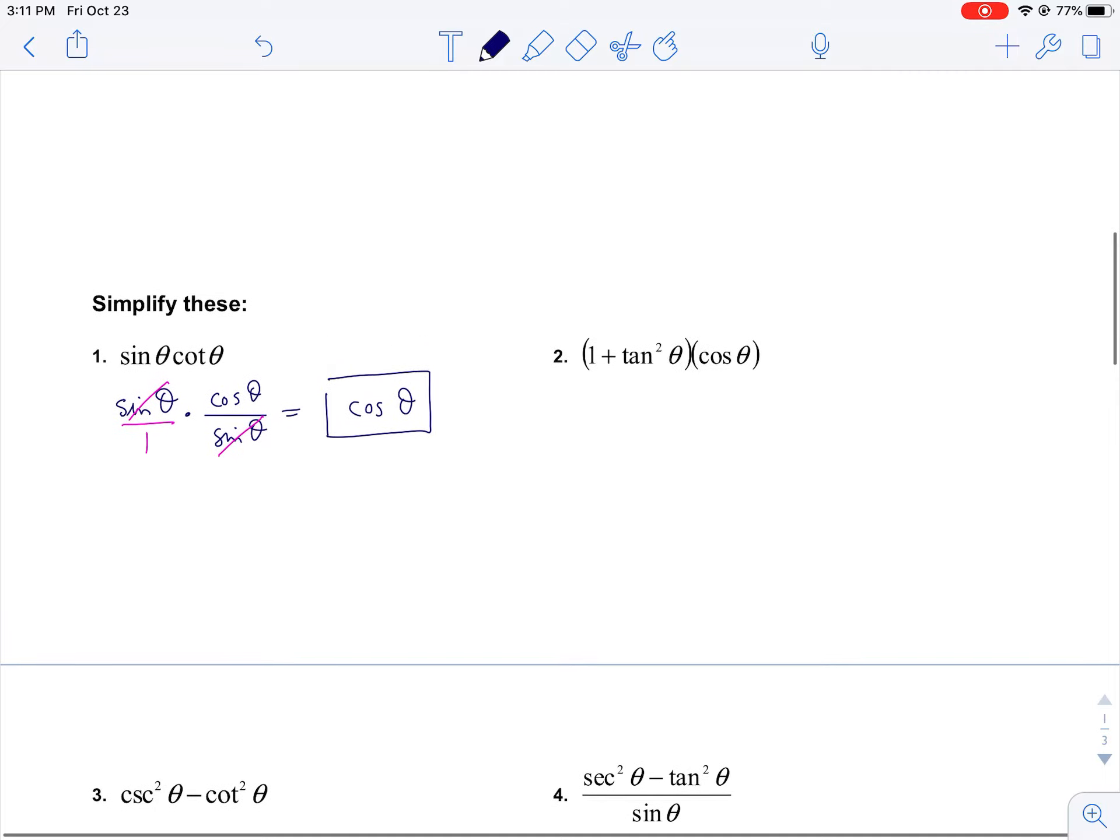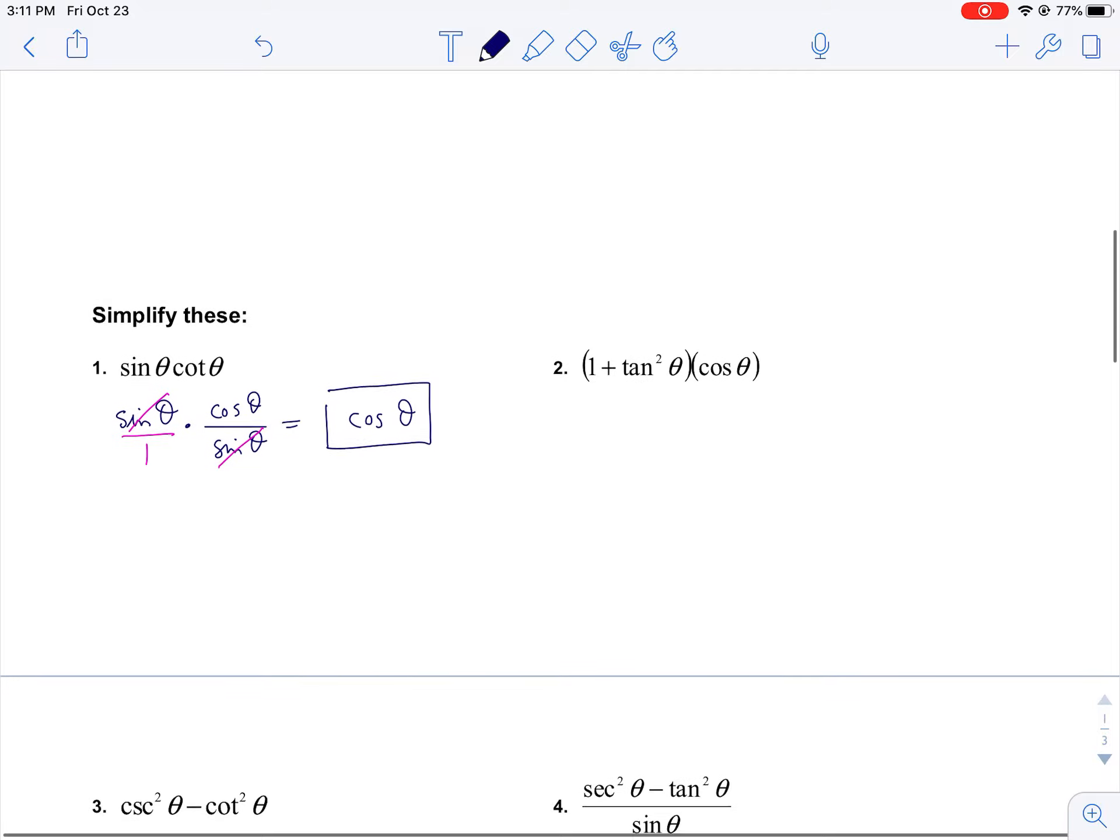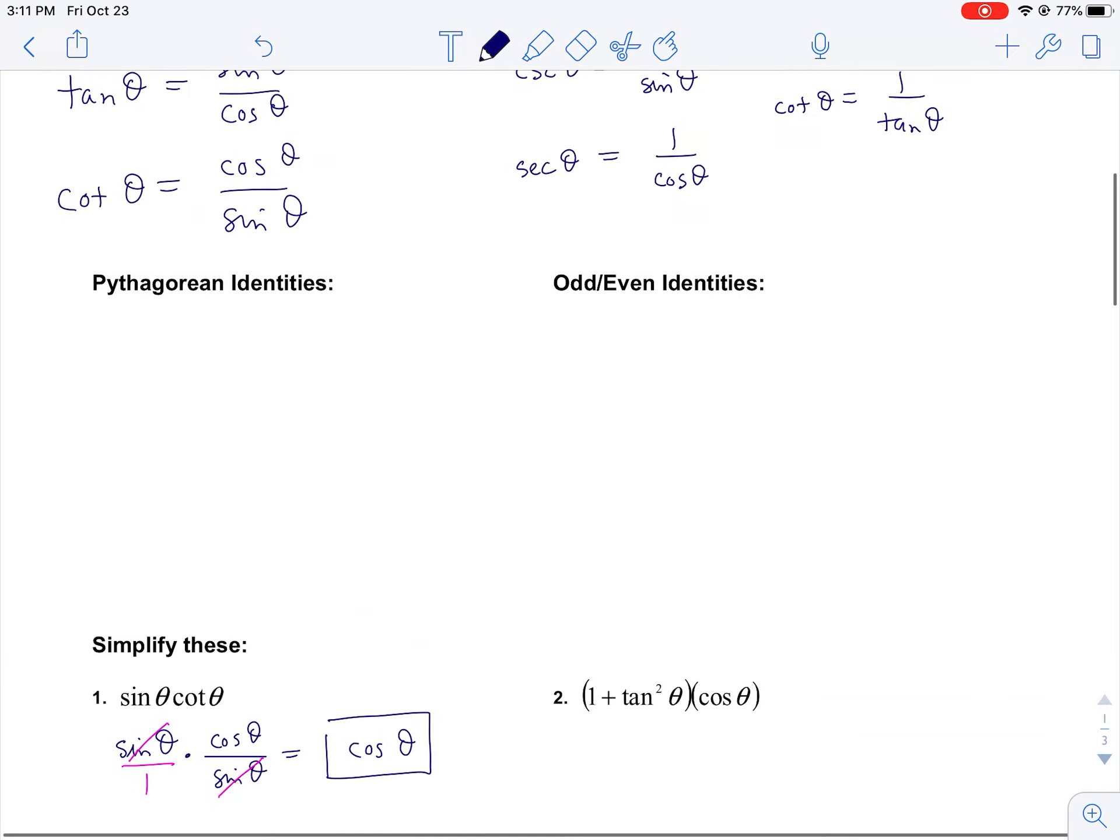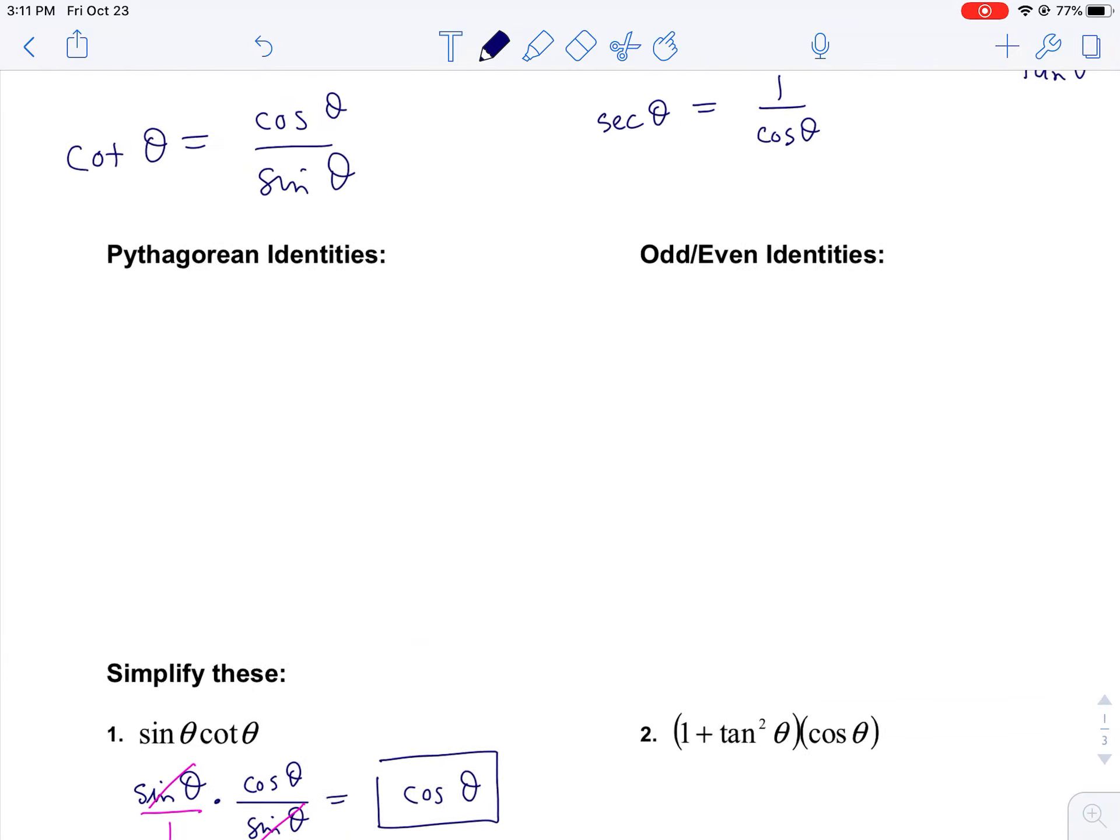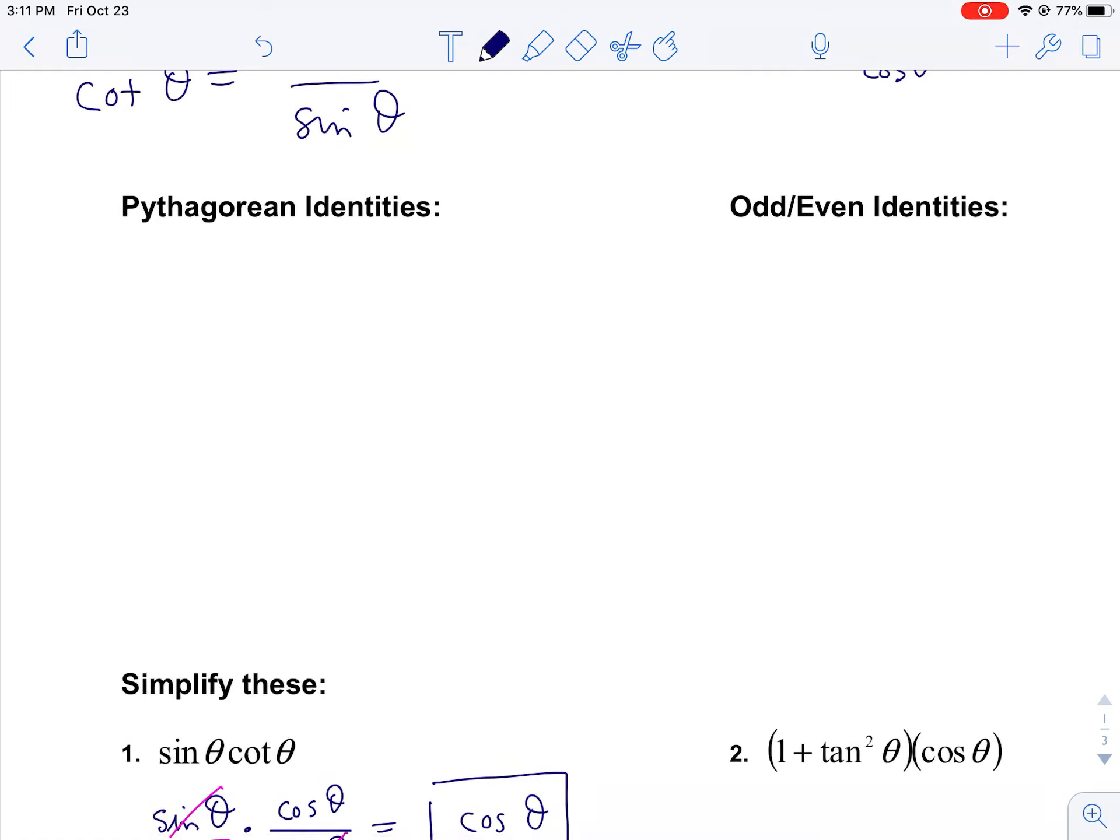All right, the most important identities are called the Pythagorean identities. So the first Pythagorean identity is sine squared θ plus cosine squared θ equals 1. I'm going to give you a real quick derivation of this. I feel like I'm obligated to do it.